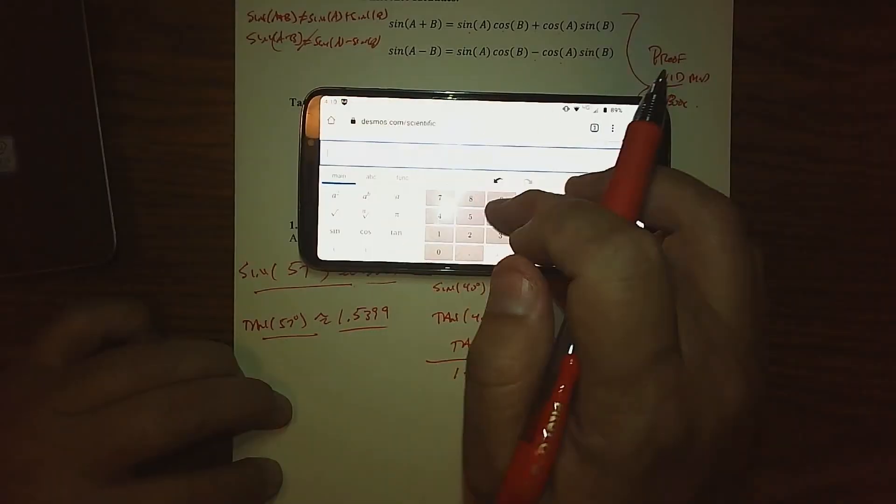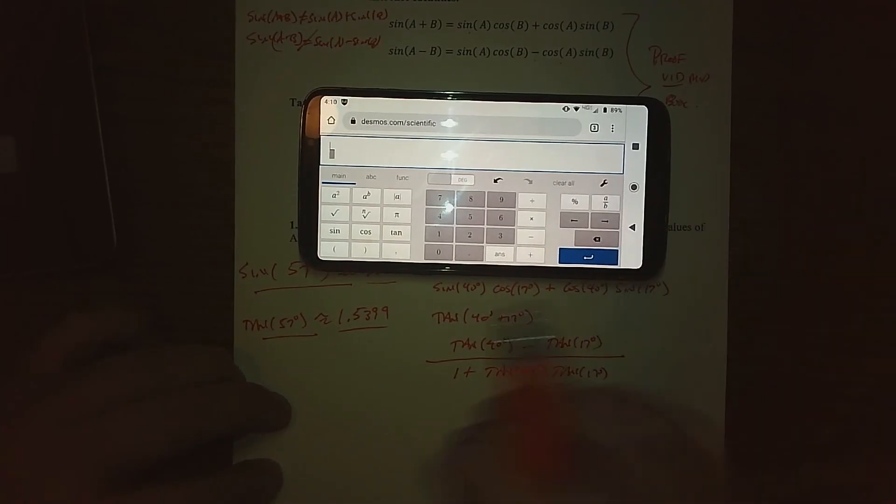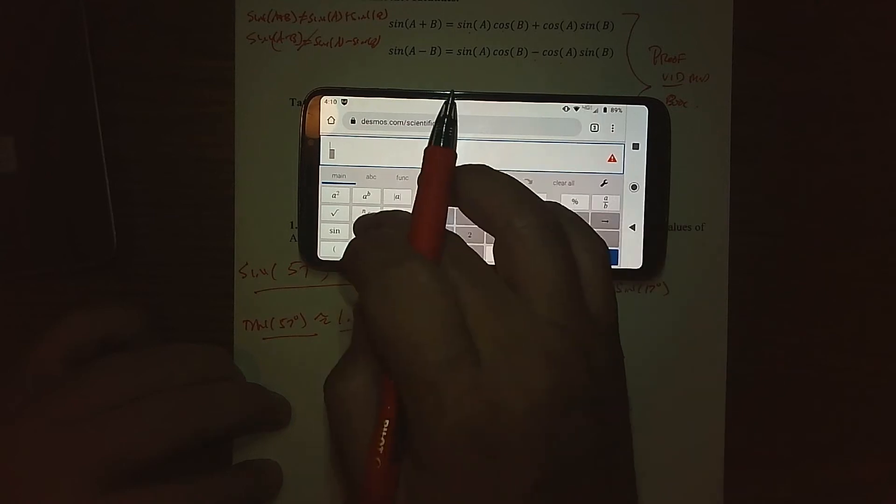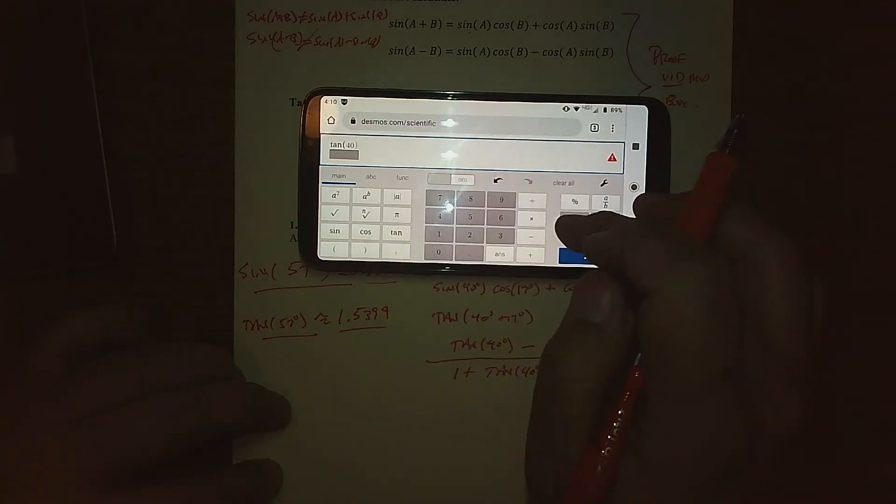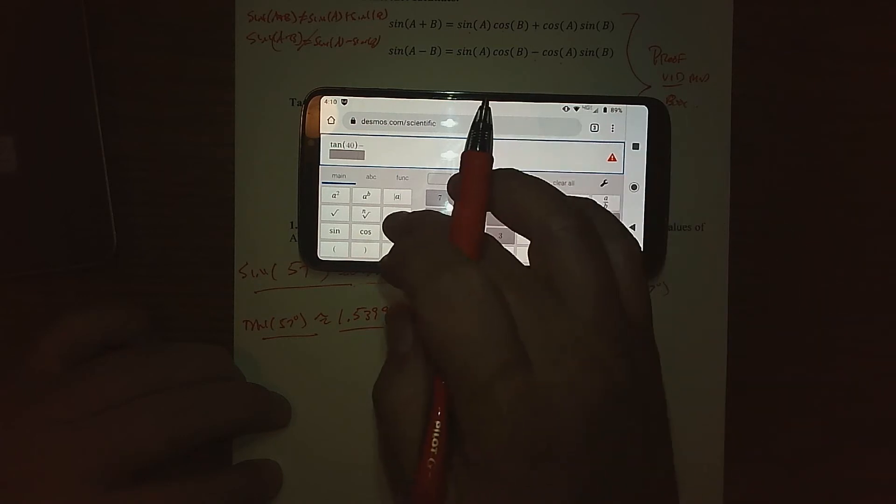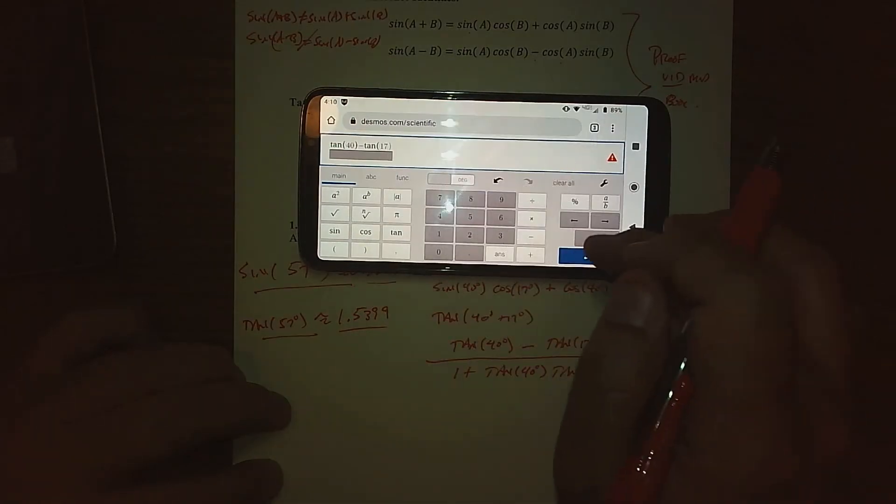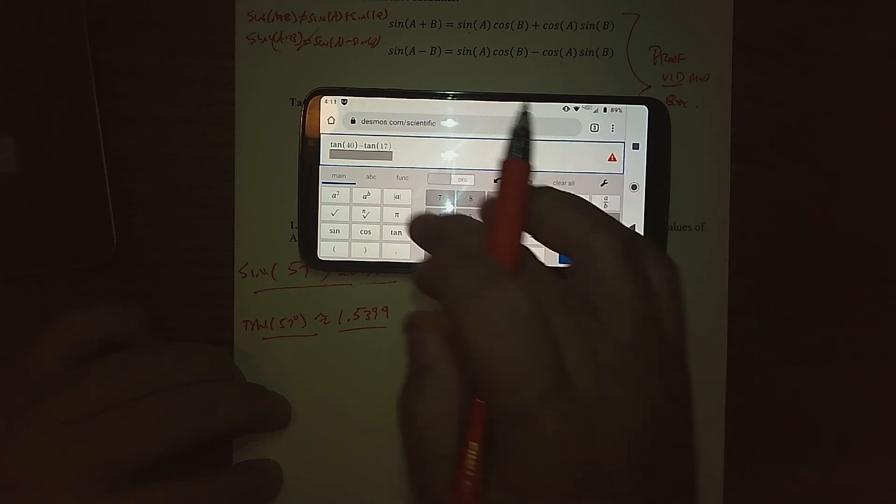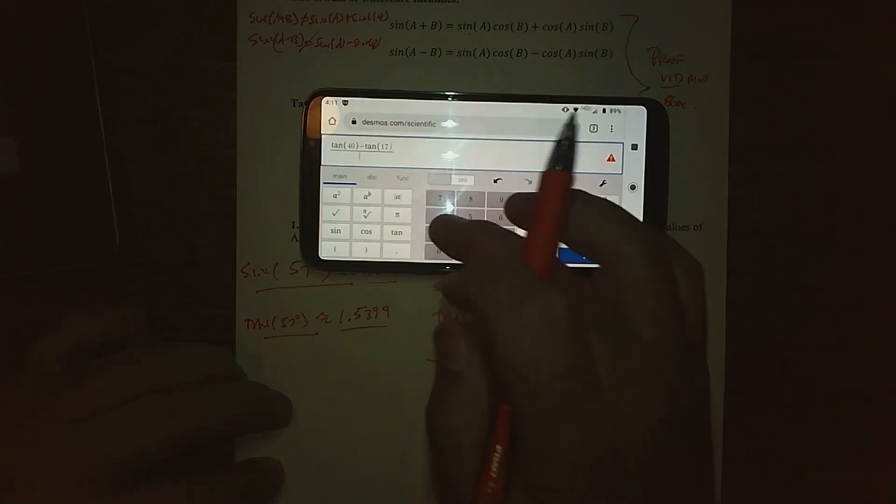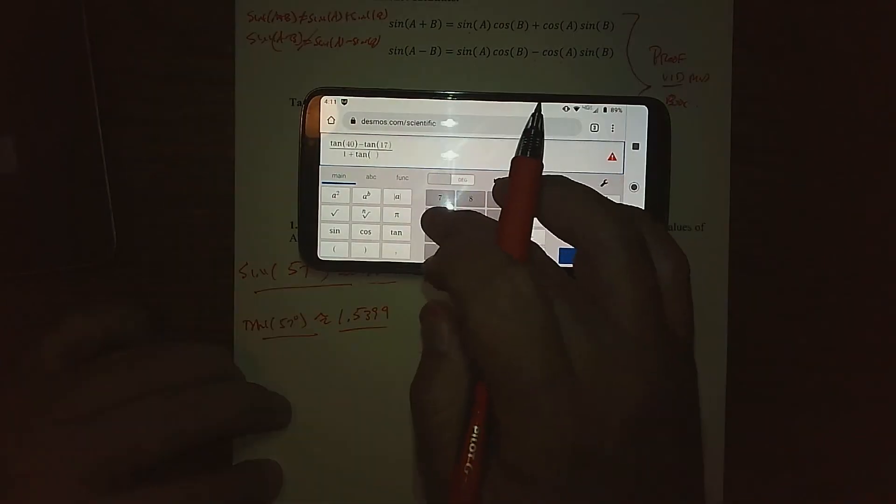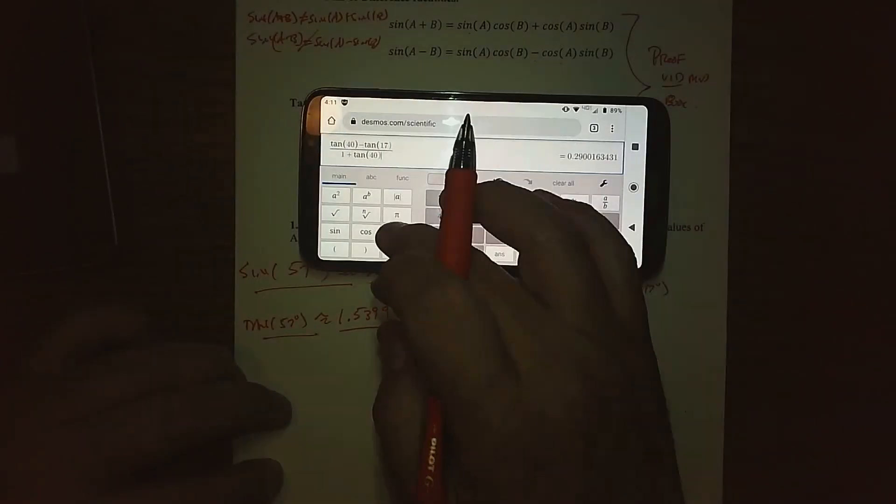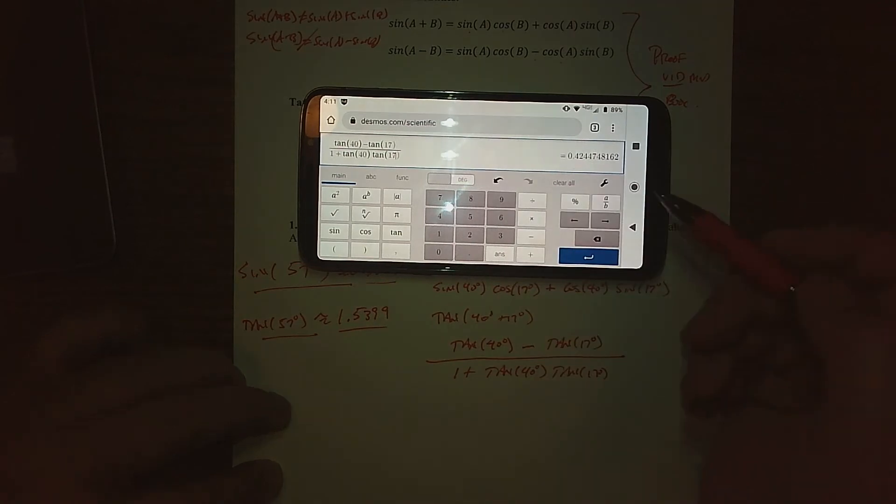So again, coming over here to my calculator, just to kind of do a technical proof. I've got a fraction. So we've got a fraction here. And on the top, we have the tangent of 40 degrees, and we are subtracting the tangent of 17. And then on the bottom, we've got one plus the tangent of 40. And we're multiplying that to the tangent of 13.